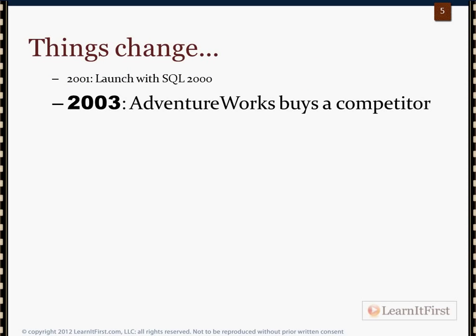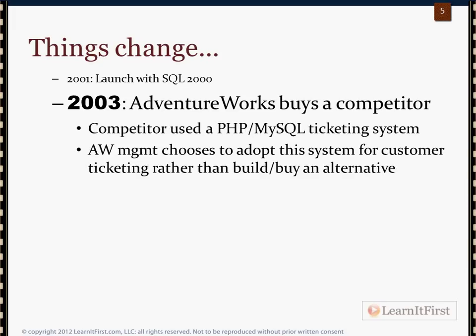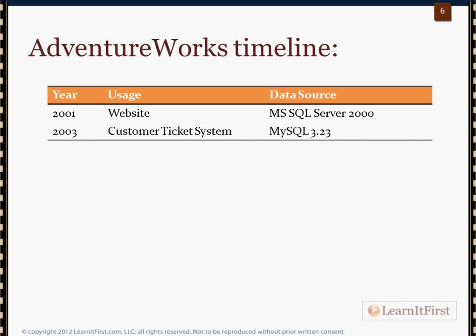In 2003 they're doing really well and decide to buy a competitor that uses a ticketing system — customers write in tickets and you can see the lifecycle: how quickly are customer service agents answering and closing tickets. That competitor ran a PHP and MySQL ticketing system. AdventureWorks management likes the idea and decides to just use the existing system. So now you have two technologies in play: Microsoft SQL Server 2000 and MySQL 3.23. Version numbers matter — there are all kinds of interoperability issues between different versions.